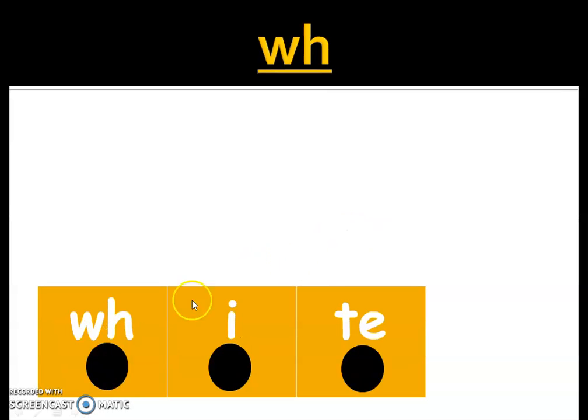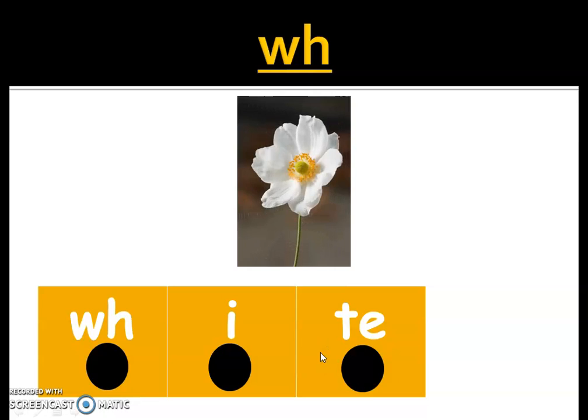Good. Let's try this one. Wh. This is a magic E so it makes it say I. Wh-i-t-e. White. This flower is white.